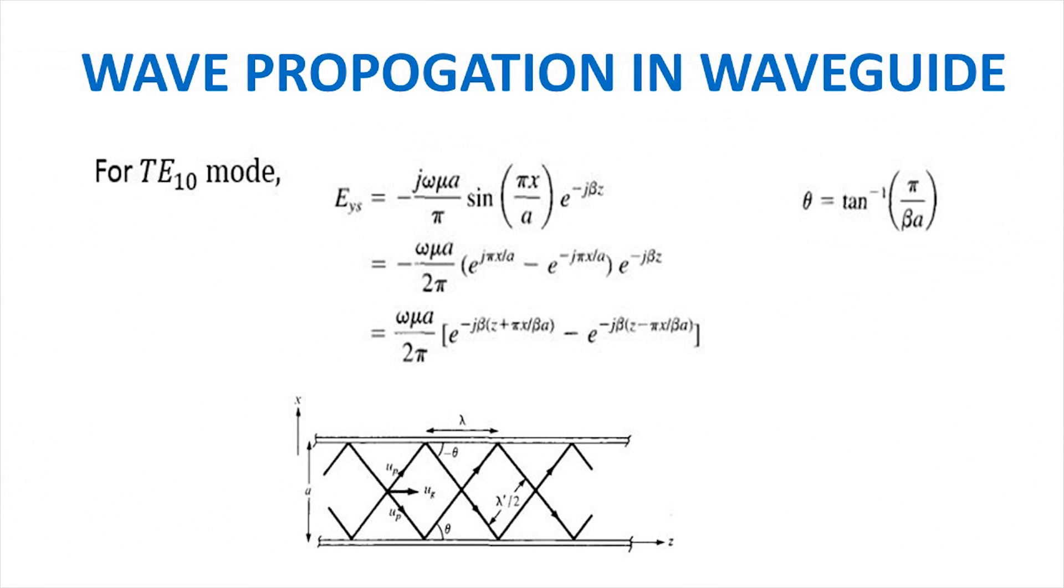Wave propagation in waveguide. The field components all involve the terms sine or cosine of m pi by a x or n pi by b y times e raised to the power minus gamma z. Using Euler's form, a wave within the waveguide can be resolved into a combination of plane waves reflected from the waveguide walls.